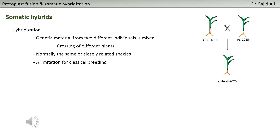You have the possibility to identify desirable traits within the species, which has potential for plant breeding in the long run. However, this hybridization has a limitation: you can only cross related species or related individuals. You cannot cross just any plant.